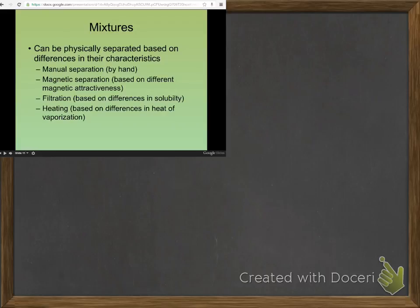The big thing with mixtures is that they can be physically separated, and we do that based on differences in their characteristics and their properties. There are four methods listed here for separating mixtures. Manual separation is not something we can really do in a chem lab. If I mixed some salt and some sand in a container, could you physically separate it? Could you pick it apart?